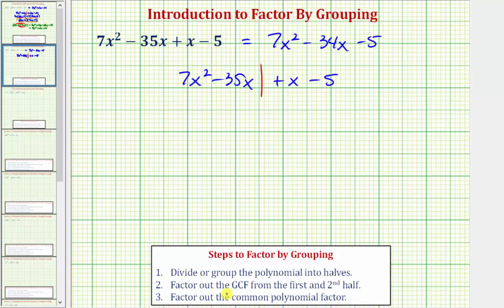Step two is going to be to factor out the greatest common factor from the first half and the second half. So looking at just the first two terms, notice how the greatest common factor would be 7x. So we'll factor out 7x from just the first two terms. That would leave us with x minus five.